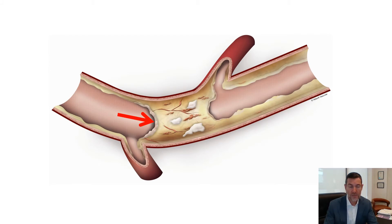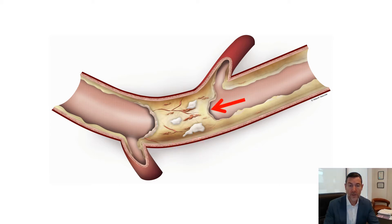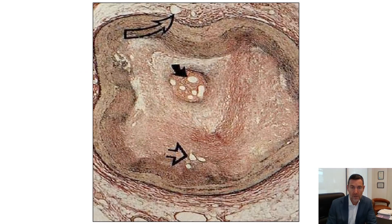CTOs are characterised by having a fibrous proximal cap that is sometimes very difficult to traverse with a guide wire. There is heavily calcified atheromatous plaque, and a less fibrotic distal cap that can sometimes be used to our advantage. They also have microchannels, which we can use to our advantage by engaging them using a low-profile guide wire.